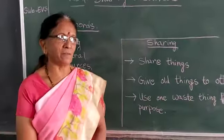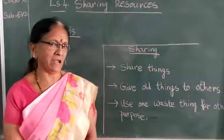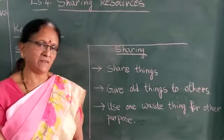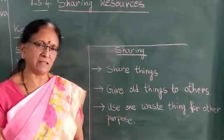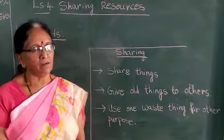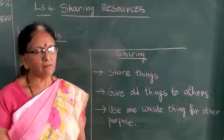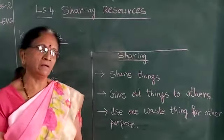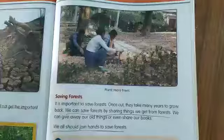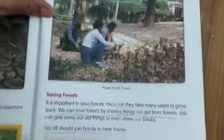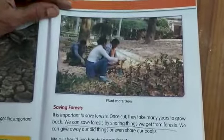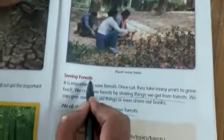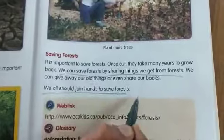Share whatever we are getting from the forest — we have to share. After this, we have to read the lesson from the reader. After reading the lesson, we will complete Volume 3, S4 Sharing lesson. Now, everyone open your EBS reader, page number 157. Plant more trees. Saving Forest — this is the last lesson.